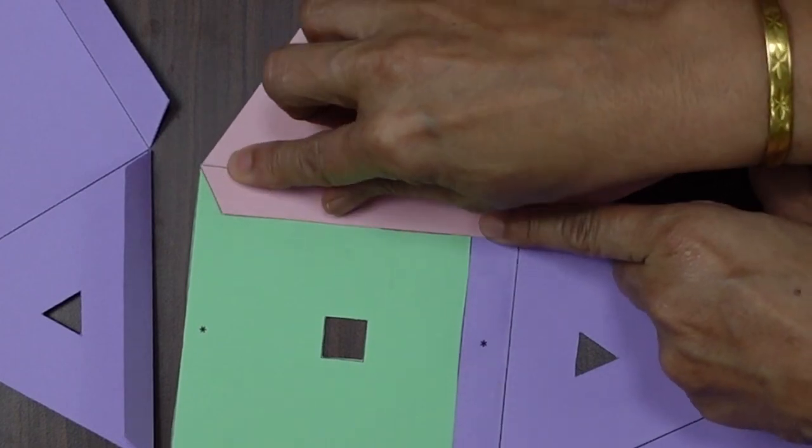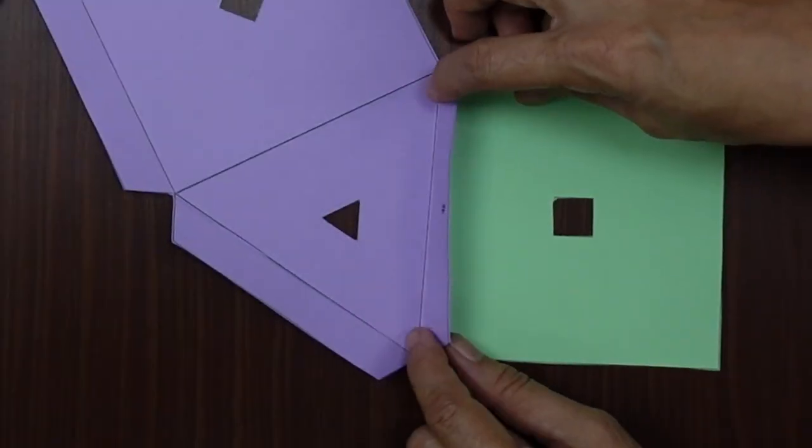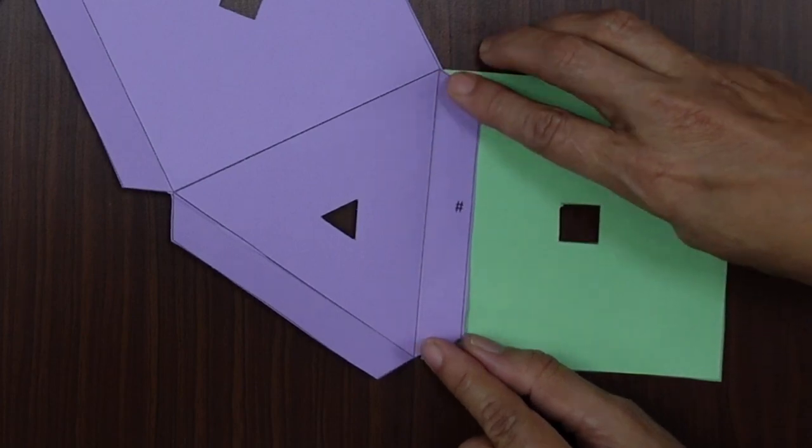Now we have to connect the cutouts in such a way that while connecting, connect the flap on the paper which has a star to the star and connect the flap which has a hash to the hash.